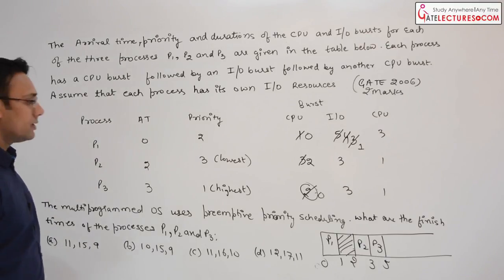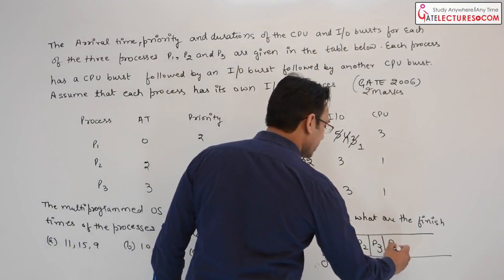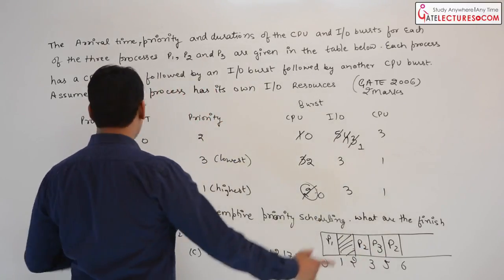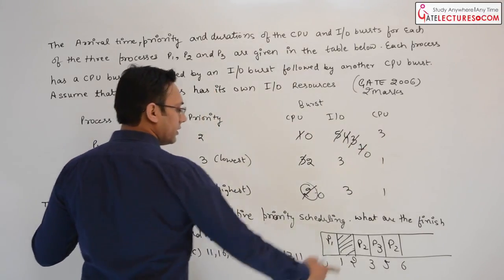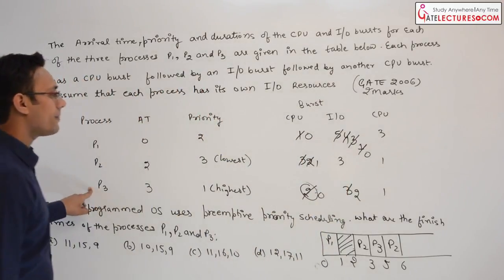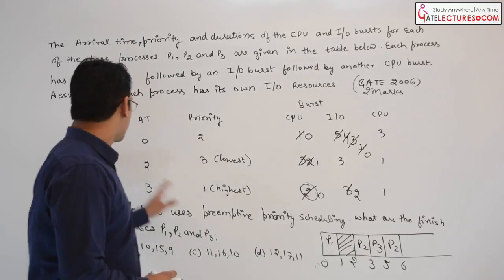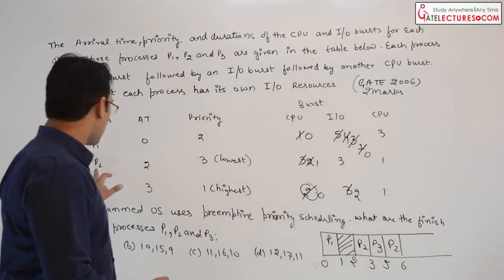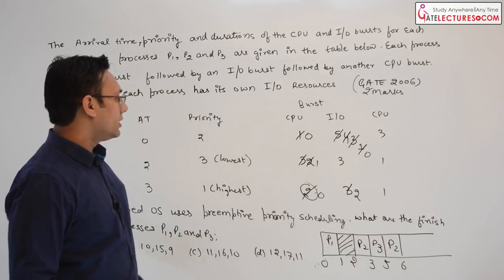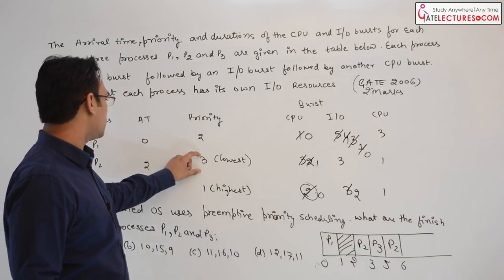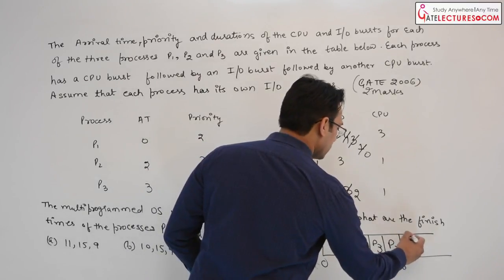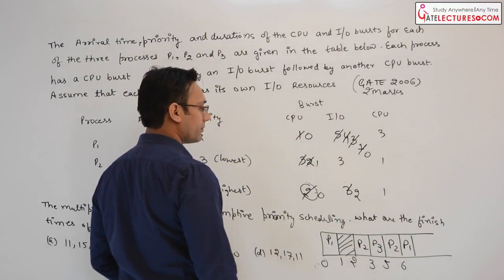After this, we have processes P1 and P2 both needing the CPU. Process P2 will be executed for 1 unit of time. Why? Because after that 1 unit of time, process P1 will finish its IO and P3 will also complete 1 unit of IO. Now P1 and P2 both require the CPU, but P1 has higher priority than P2. Therefore, we will execute process P1 for 2 units of time.